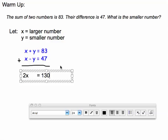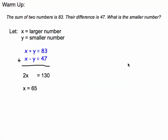I divide both sides by 2, and I get x equals 65. That gives me the larger number.